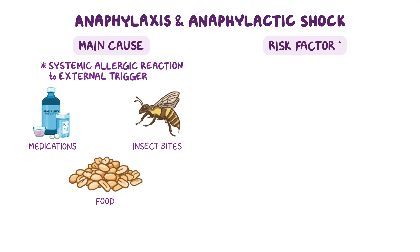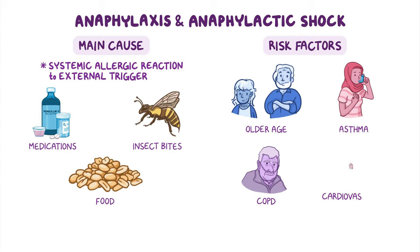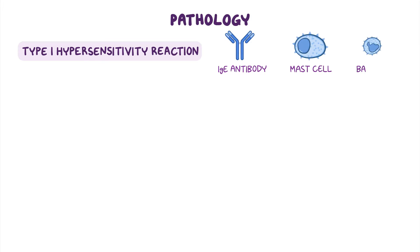Important risk factors include certain comorbidities such as older age, asthma, and other respiratory disorders like chronic obstructive pulmonary disease, or cardiovascular disease. The pathophysiologic mechanism behind anaphylaxis and anaphylactic shock is a type 1 hypersensitivity reaction, which is mediated by IgE antibodies that bind and sensitize the mast cells and basophils.